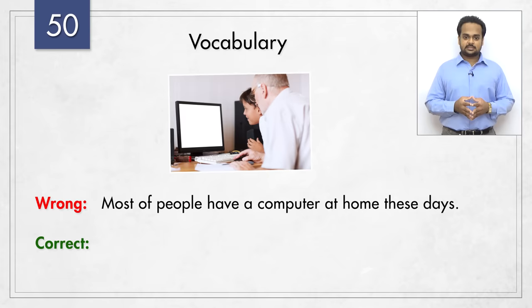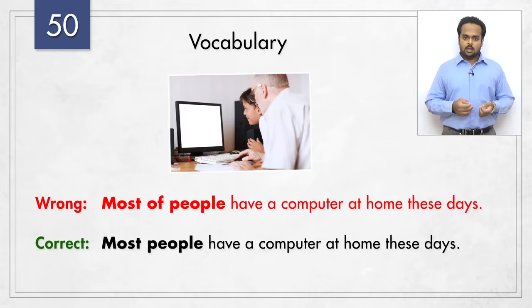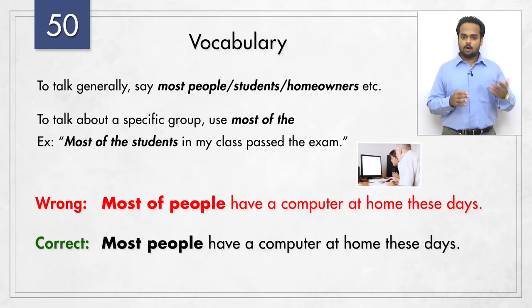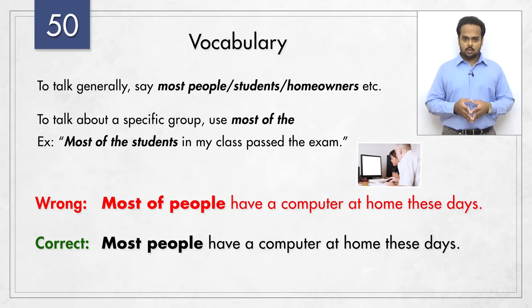And here's the last sentence in our lesson – 'most of people have a computer at home these days.' The error is saying 'most of.' Just say 'most people have a computer at home these days.' When we are talking generally, we always say 'most people,' 'most students,' 'most homeowners,' etc. If you are talking about a specific group, then you can say 'most of the' – 'most of the students in my class passed the exam.' Or you might say 'most of my students passed the exam with flying colors.'